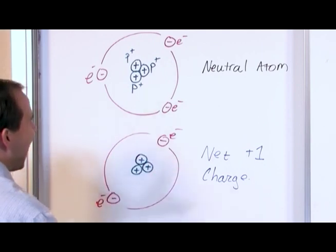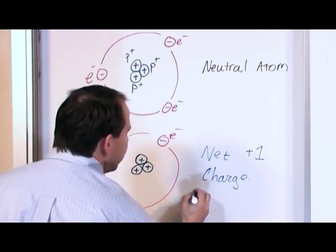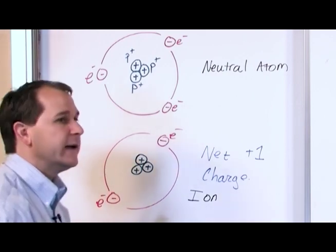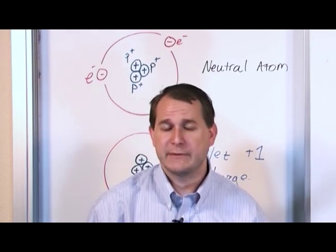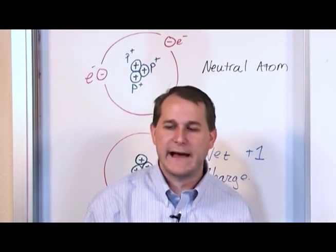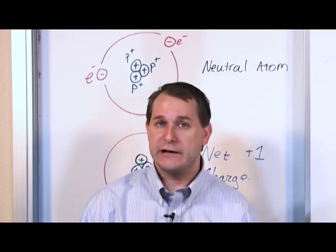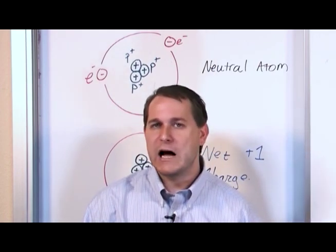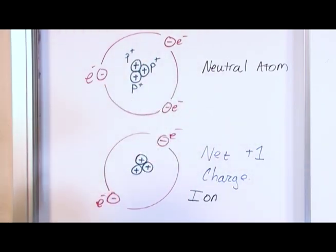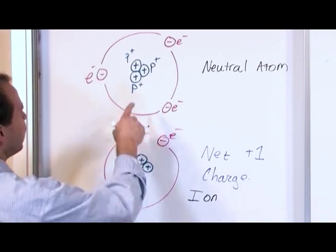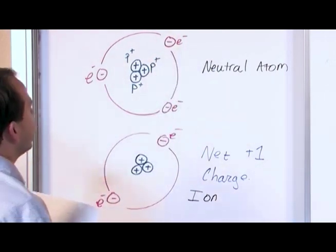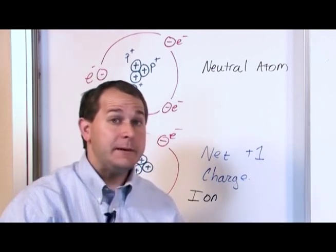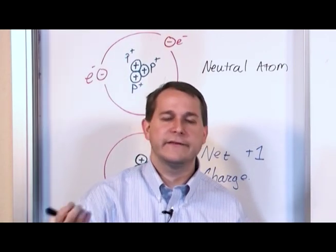We don't really refer to this as an atom anymore — we refer to it as an ion. It's a positive ion. An ion is just a word that means an atom that has a charge on it. If I could reach in and pull some electrons away, my atoms would have some net charge left over and we'd call it an ion. If it loses electrons it has a net positive charge; if we could stick an extra electron in, it would have a net negative charge. Ions can be positive or negative depending on whether the atom has lost or gained an electron.